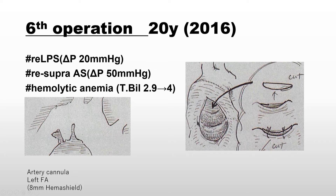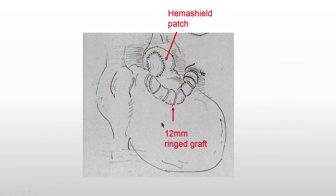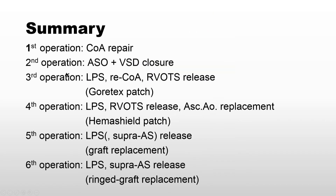In the sixth operation, the ascending aorta artificial graft was opened, and a section of this area was cut off. Inside the lumen, a very smooth check was performed. The sixth-time operation involved the artificial graft through the main pulmonary artery to the left PA, and a hemishield patch on the ascending aorta.